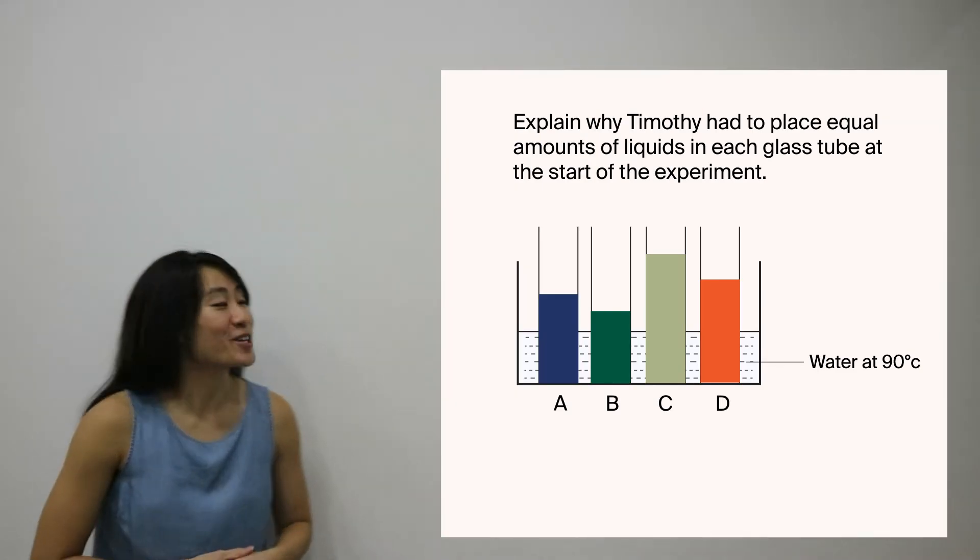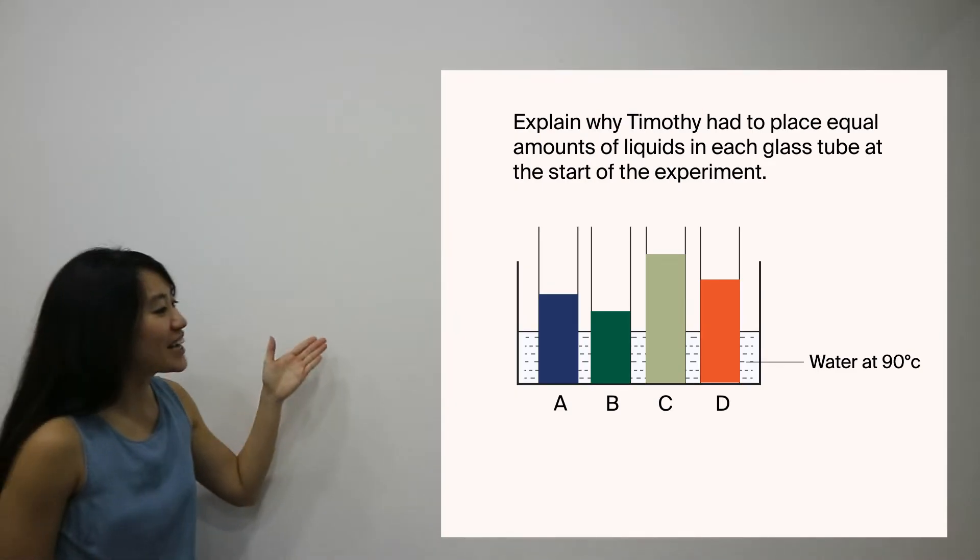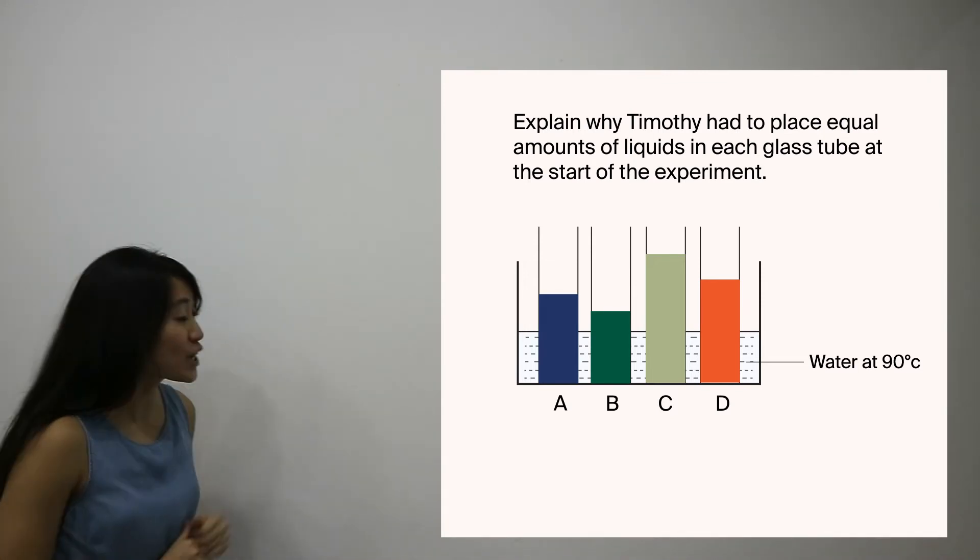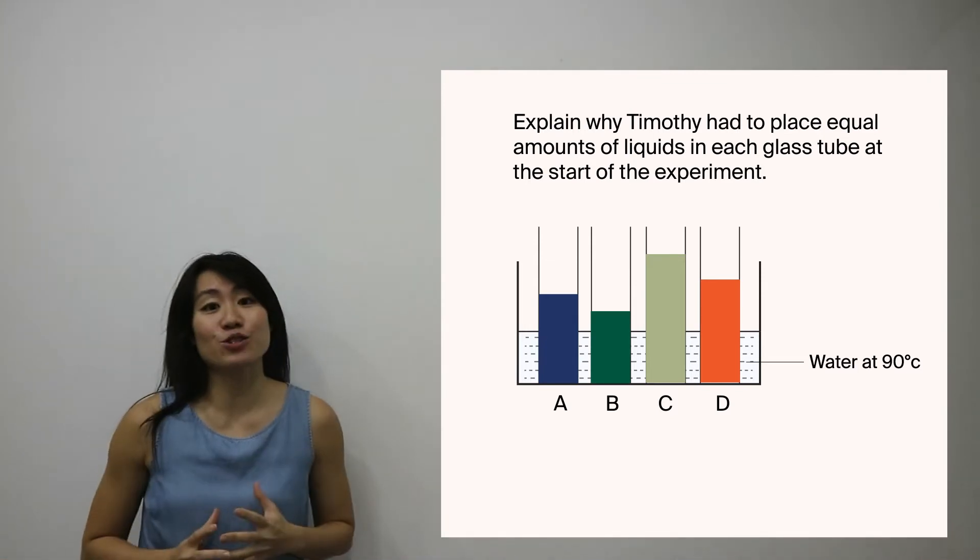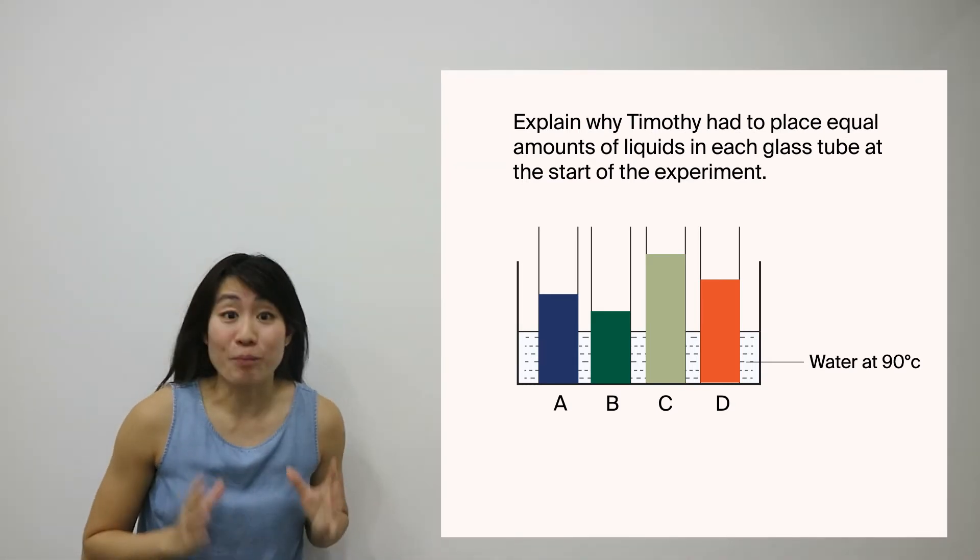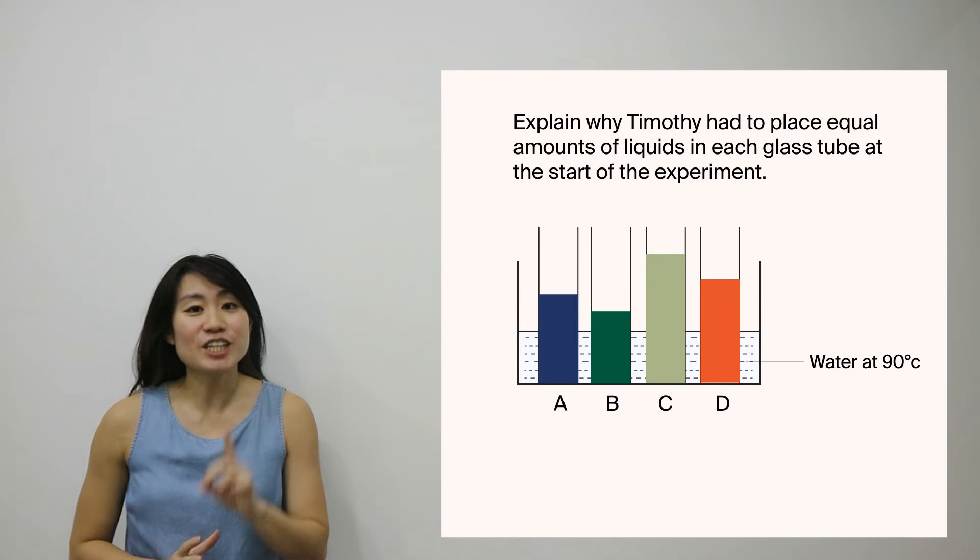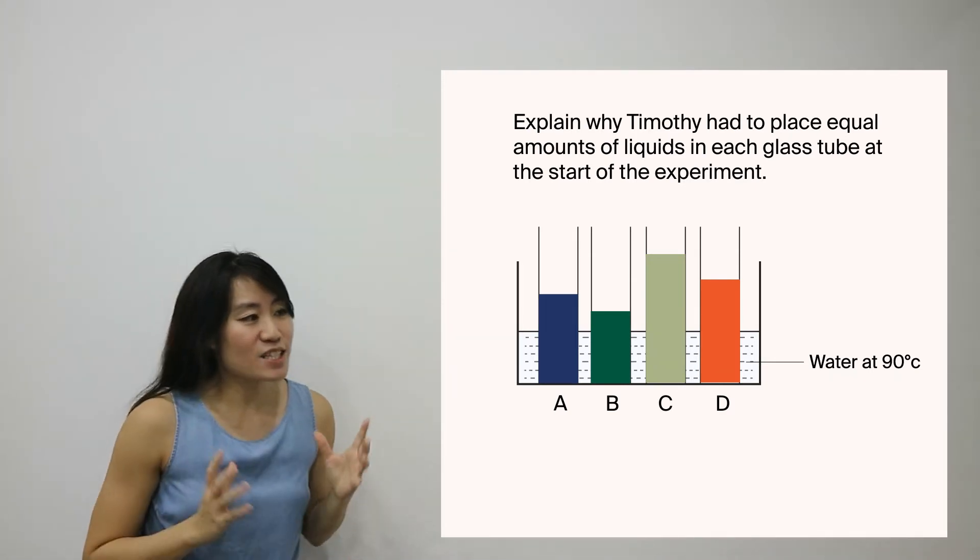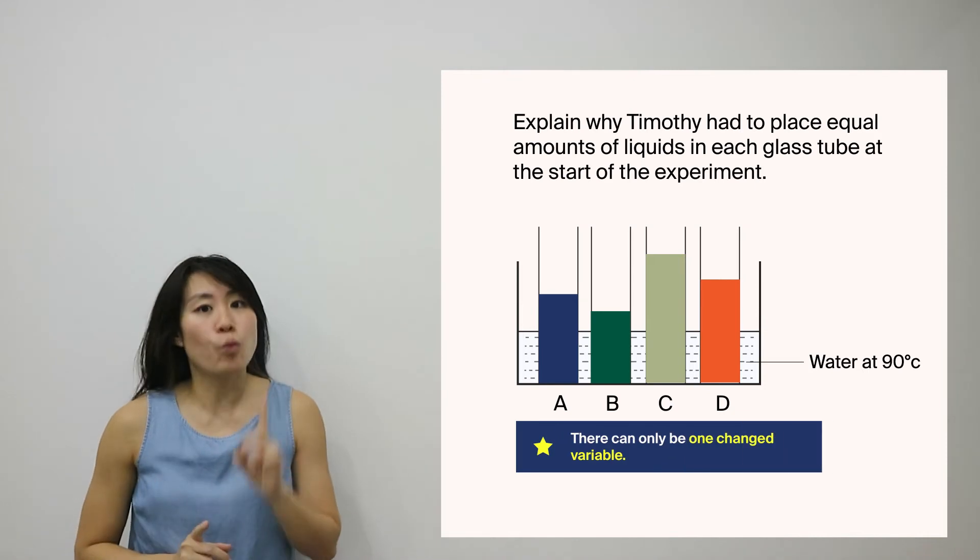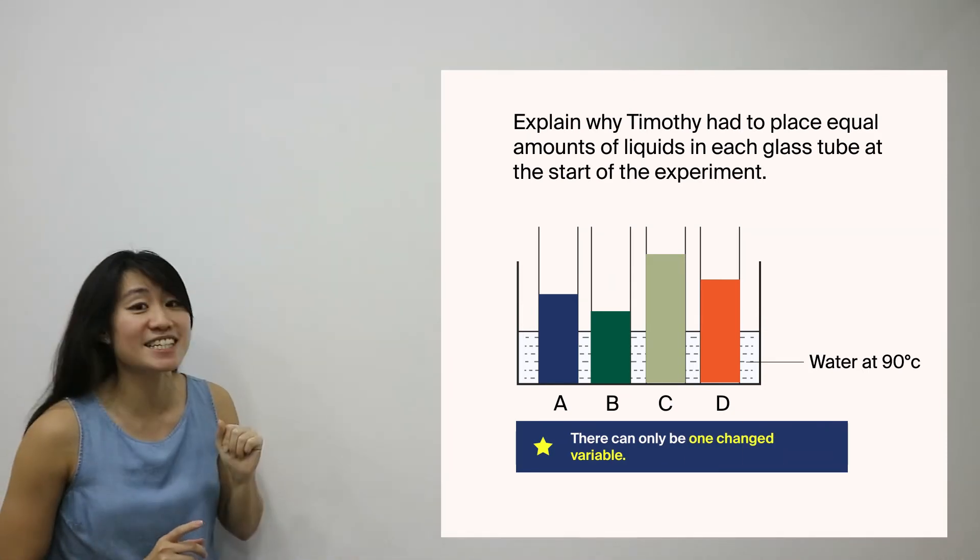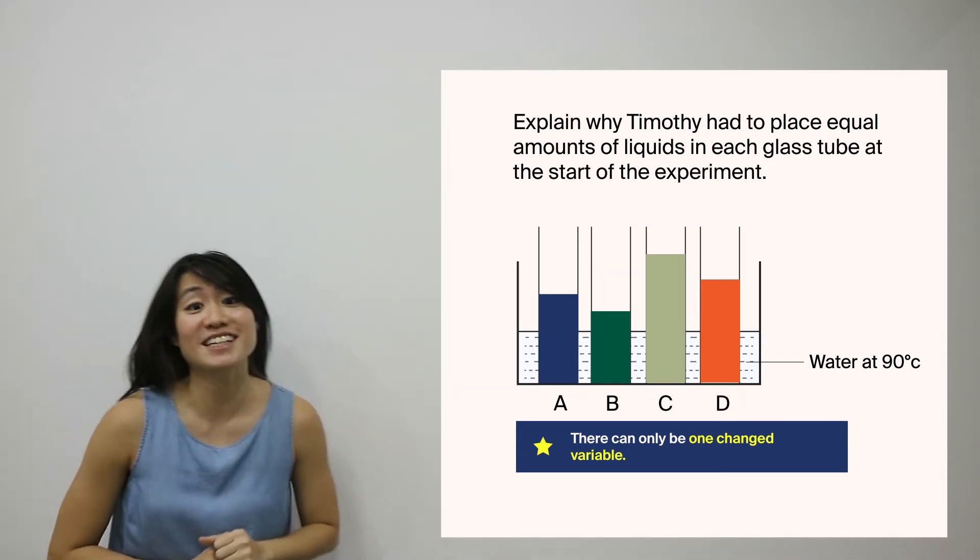Now here's the question. Explain why Timothy had to place equal amounts of liquids in each glass tube at the start of the experiment. The key here is that the amount of liquid used must be the same. So in an experiment there can only be one change variable which is the types of liquids that have already been mentioned in this question.